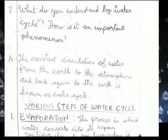Long answer, question number 2: What do you understand by the water cycle? How is this an important phenomenon? The constant circulation of water from the earth to the atmosphere and back again to the earth is known as the water cycle.